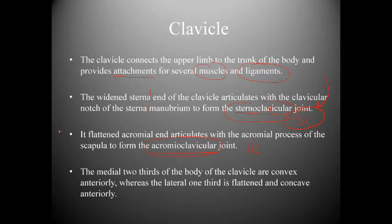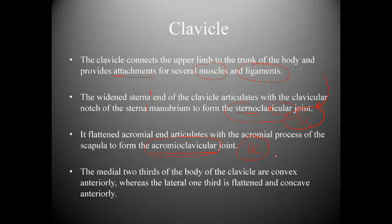The clavicle connects the upper limb to the trunk of the body and provides attachments for several muscles and ligaments. The medial sternal end of the clavicle articulates with the clavicular notch of the sternal manubrium, forming the sternoclavicular joint, commonly abbreviated as the SC joint. The acromial end of the clavicle articulates with the acromial process of the scapula, forming the acromioclavicular joint, commonly referred to as the AC joint.